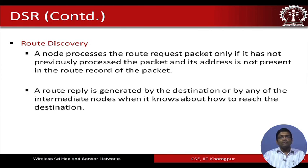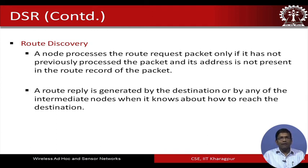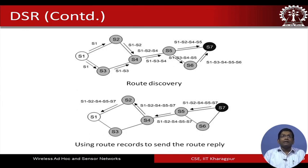A node processes the route request packet only if it has not previously processed the packet and its address is not present in the route record. A route reply is generated by the destination or by any intermediate node when it knows how to reach the destination. If an intermediate node finds from its route cache that it knows how to reach the intended destination, it will not forward the packet but will send a reply back saying it knows the route.